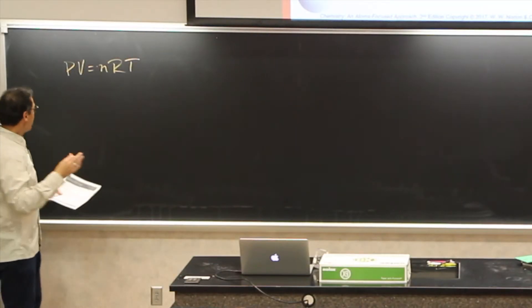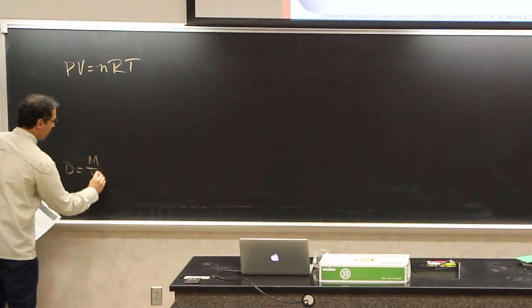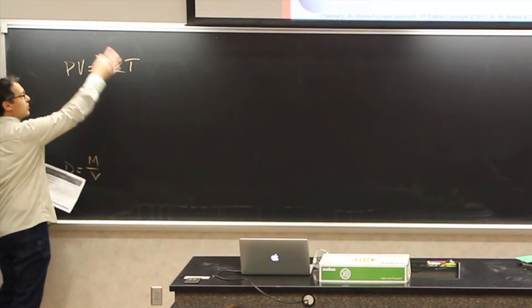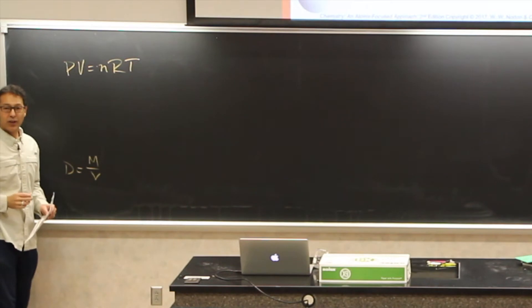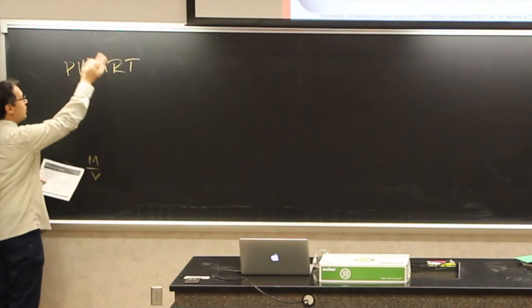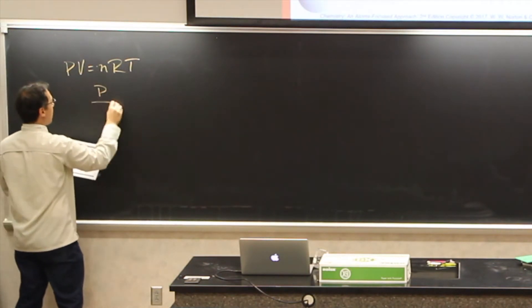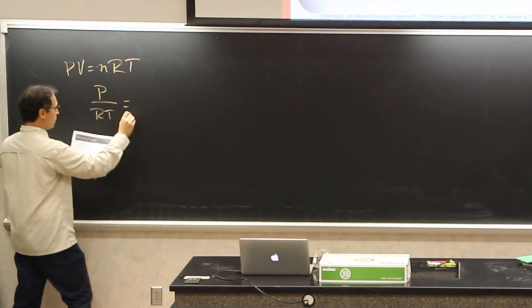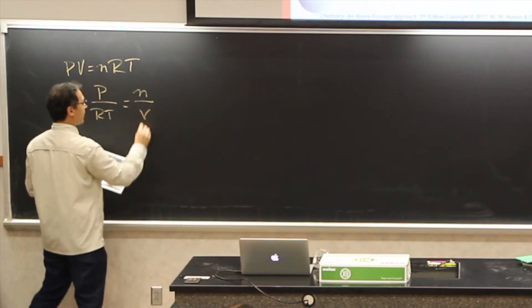We know also that density is equal to mass over volume. So the question is, can we arrange this equation somehow to give us mass over volume? And the answer is actually yes. So if we rearrange PV equals nRT, where we have P over RT equal to n over the volume. Now n over the volume, this is moles over liters, moles over volume.